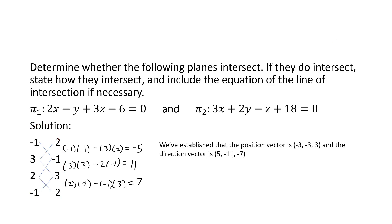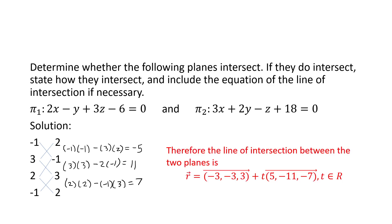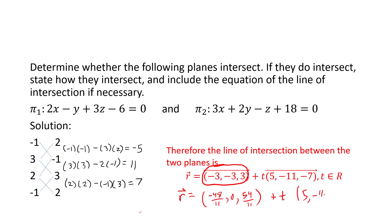We've now determined a line with position vector (−3, −3, 3) and direction vector (5, −11, −7). The line of intersection between the two planes is: R = (−3, −3, 3) + t(5, −11, −7). Alternatively, using the fractional position vector, someone might write R = (−48/11, 0, 54/11) + t(5, −11, −7). There are an infinite number of valid position vectors — so if you get a different position vector than the answer key, that may still be correct.